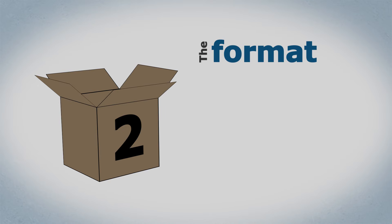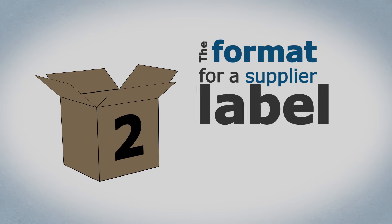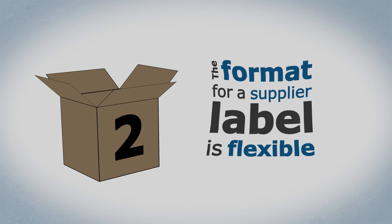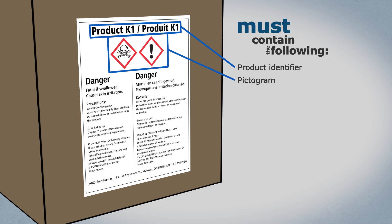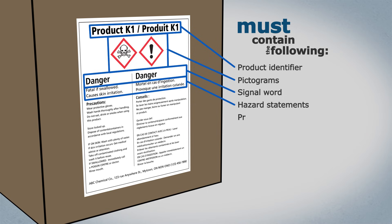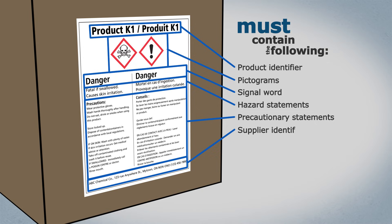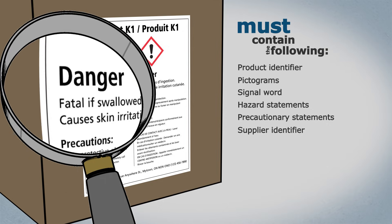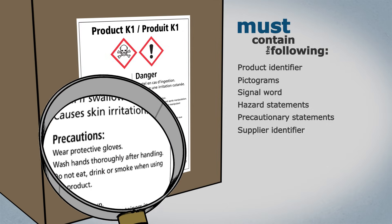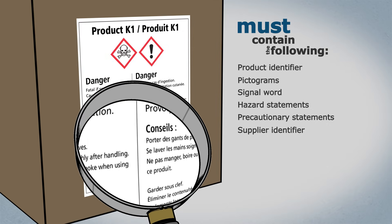Number two: the format for a supplier label is flexible, but the label must contain the following — product identifier, pictograms, signal word, hazard statements, precautionary statements, and supplier identifier. Supplier labels need to be easy to read, durable, and available in English and French.